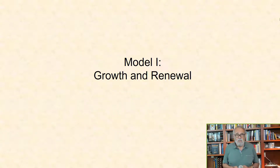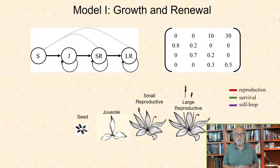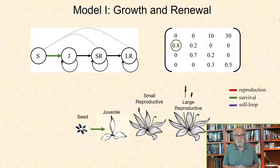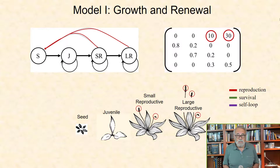Model 1: Growth and Renewal. This first model shows growth and renewal and includes four stages: seed, juvenile, small reproductive, and large reproductive. The corresponding matrix elements for the transitions between each of these stages are given here. At the seed stage, individuals either transition into the adult stage with a probability of 0.8, or they die. In other words, there is no dormancy. The input into this seed class is provided through either of the two reproductive classes.